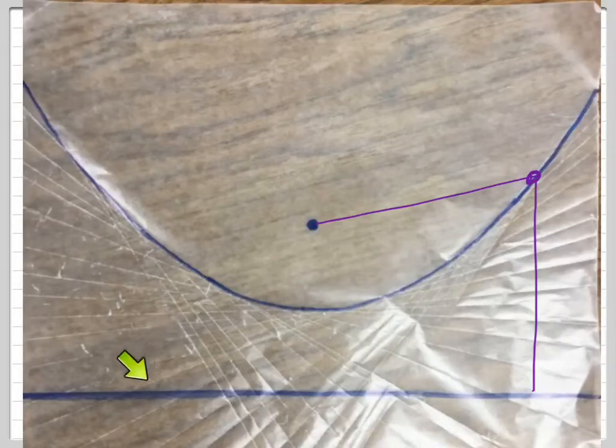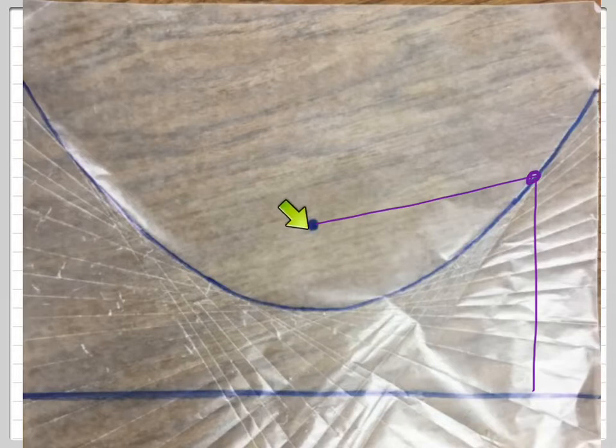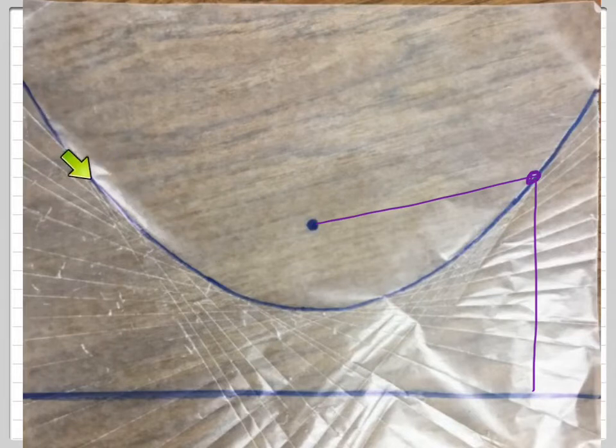So you guys just started, let me just recap. You guys just started with the directrix and you started with the focus. When you put the directrix on the focus and you make a crease and you do a bunch of creases like this, you can see your parabola.